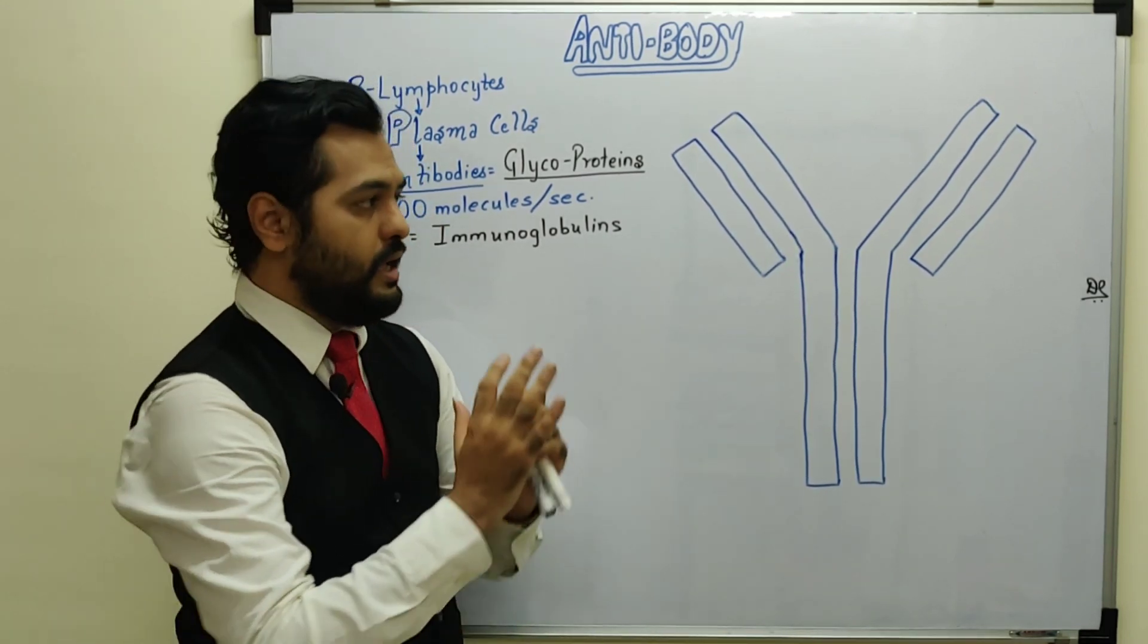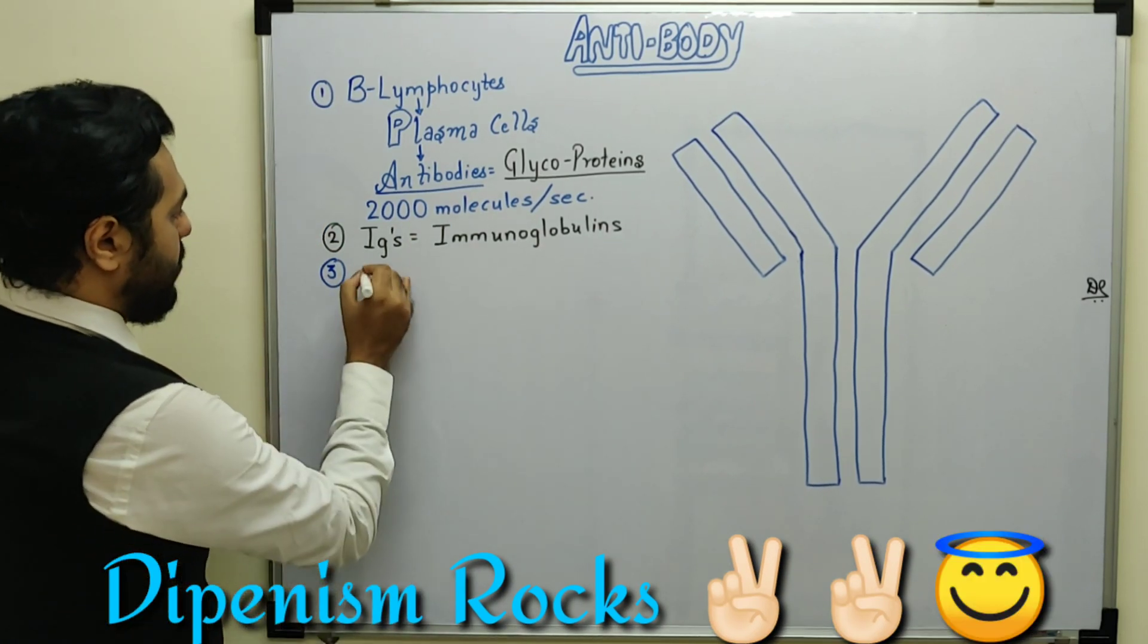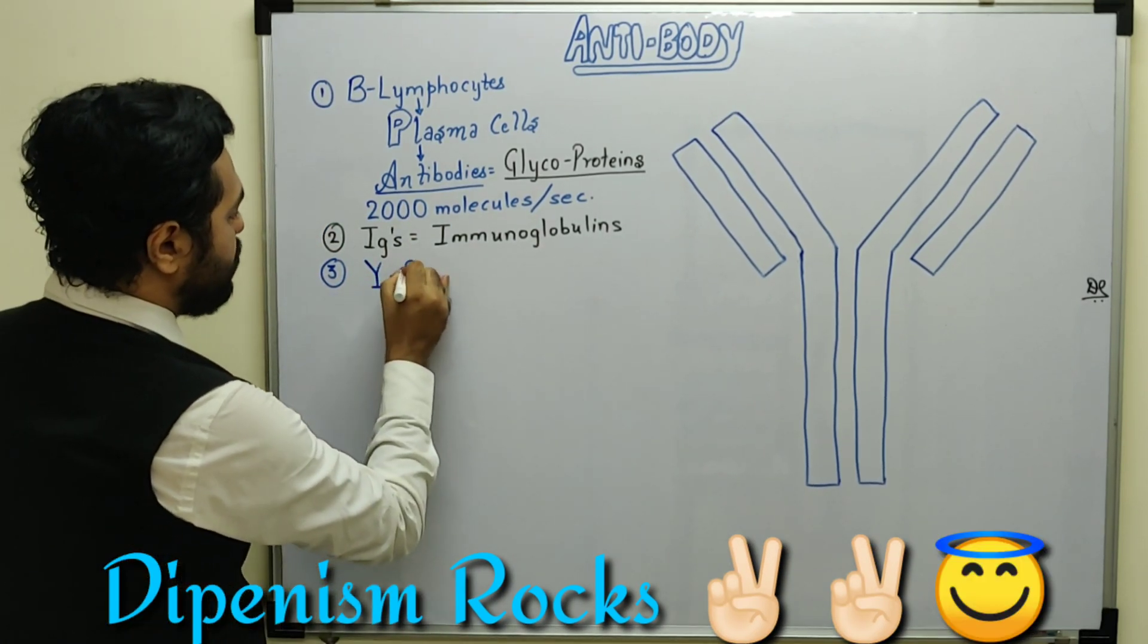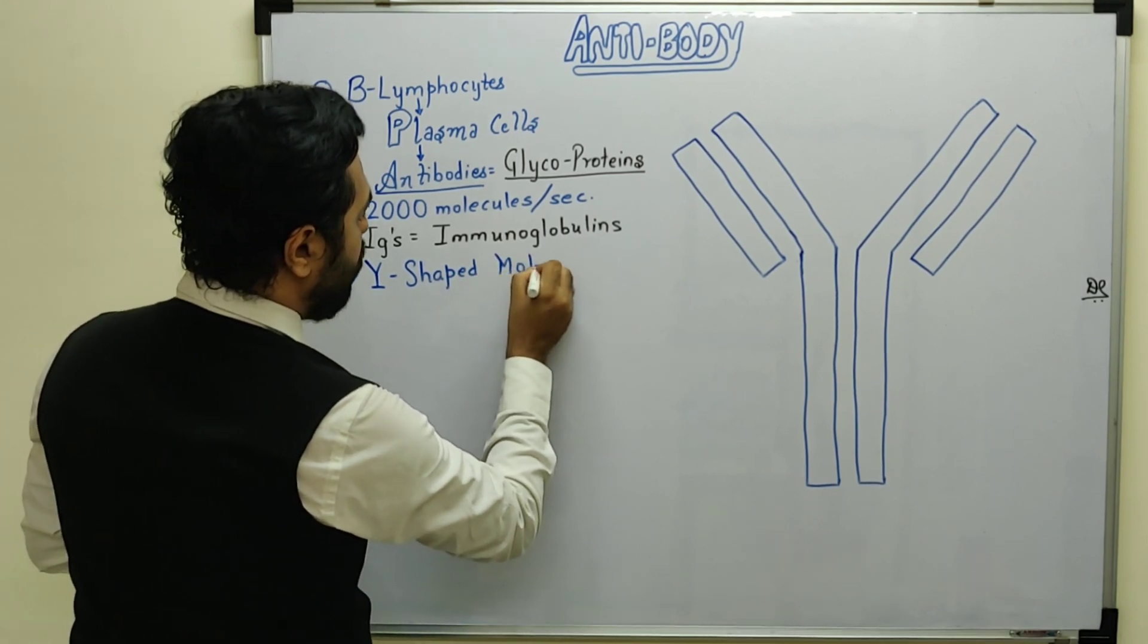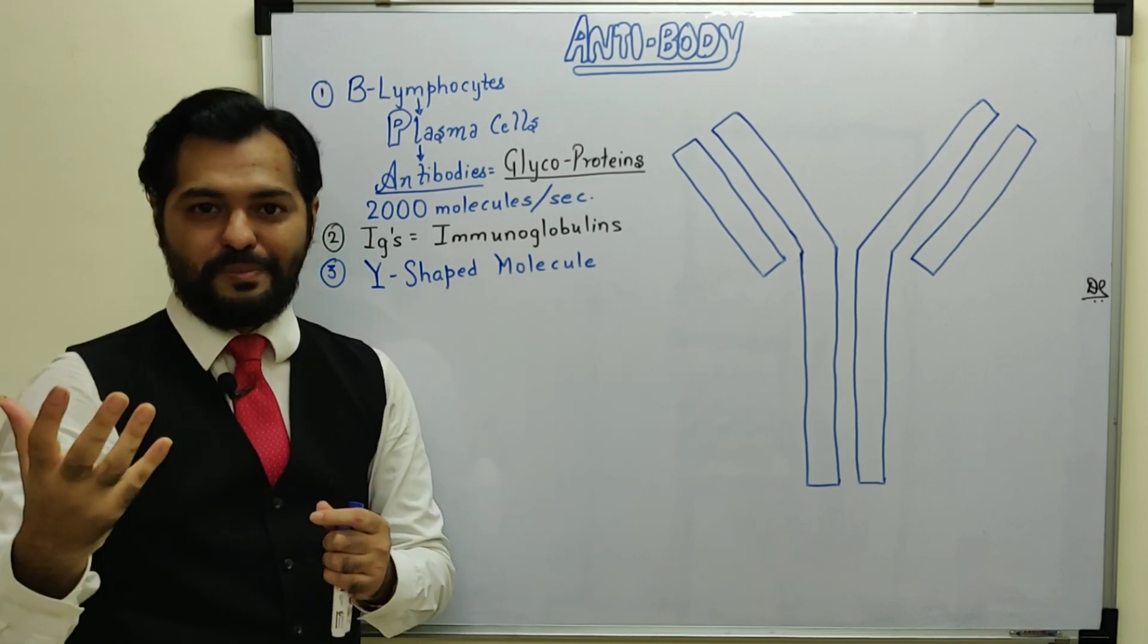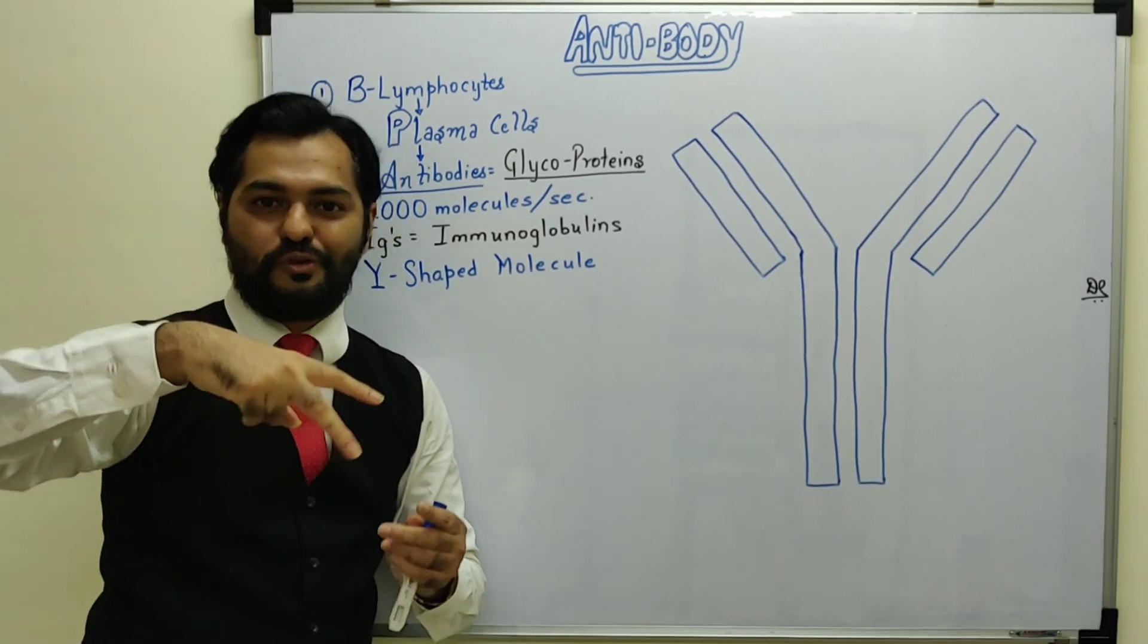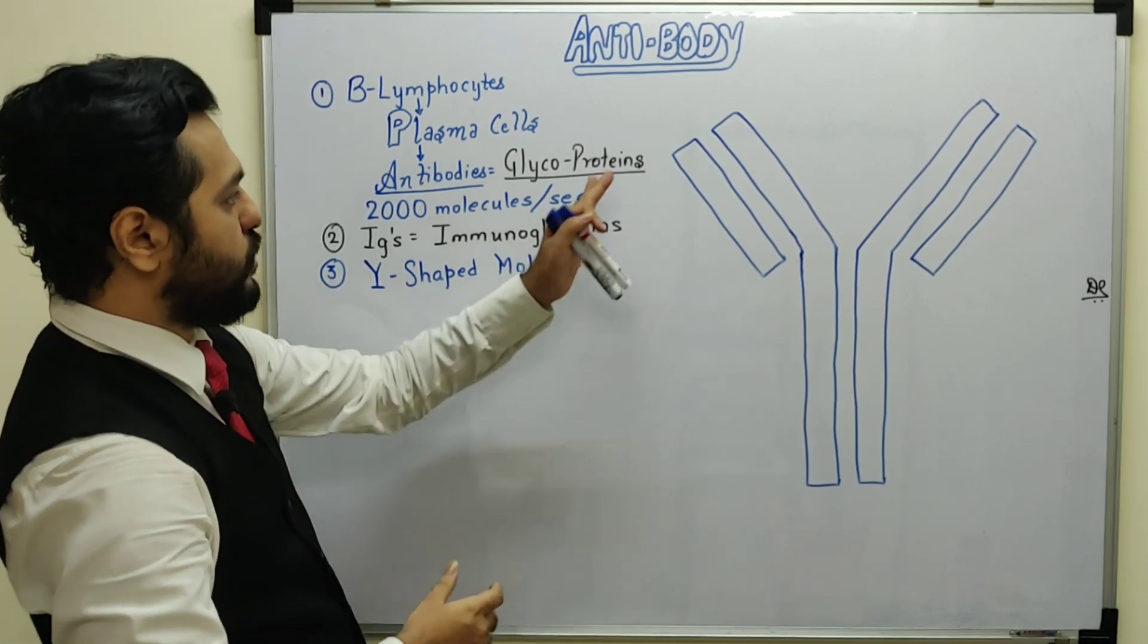This structure has been represented. First, the shape is clear - this is a Y-shaped molecule. Antibodies have a Y-shaped structure. Similar to DNA replication which was inverted Y-shape, here this Y-shaped molecule is composed of proteins.